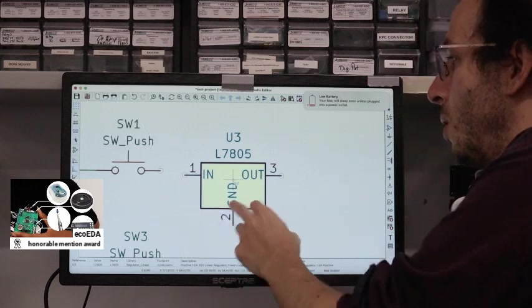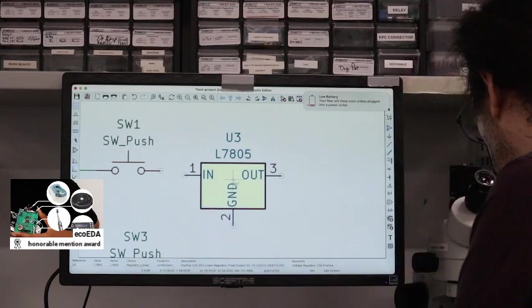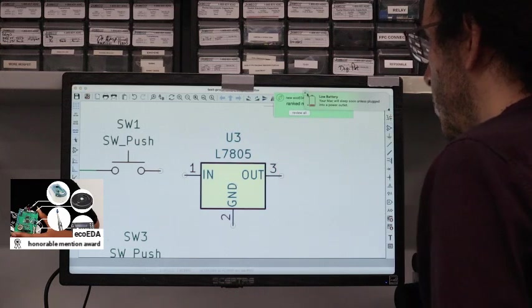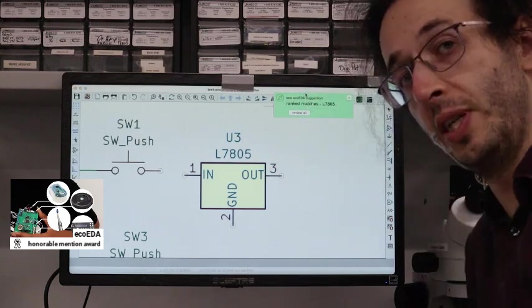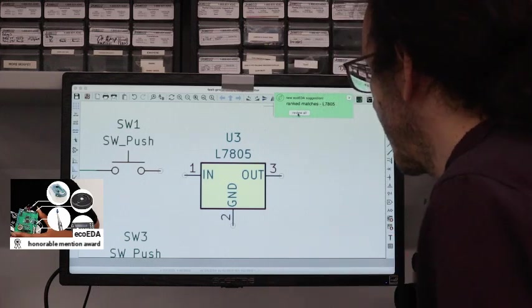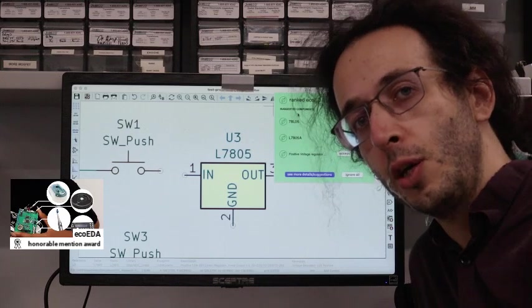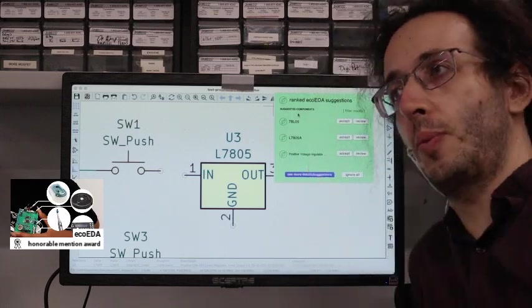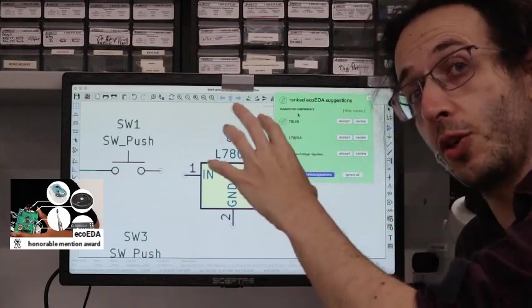And now the software that Jasmine is using is going to suggest and look at all the possible devices that I have in my trash bin. It knows the inventory of things I've trashed over the years, and actually says, hold on a second, you don't have to buy a new voltage regulator. There's plenty of other options in your trash bin that they are suggesting to me.